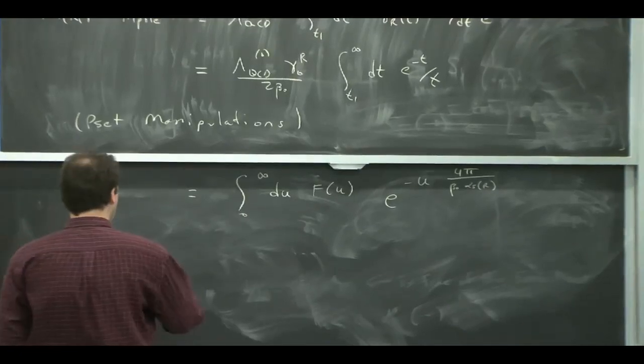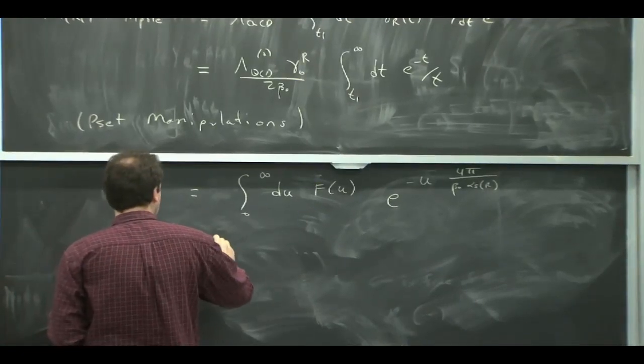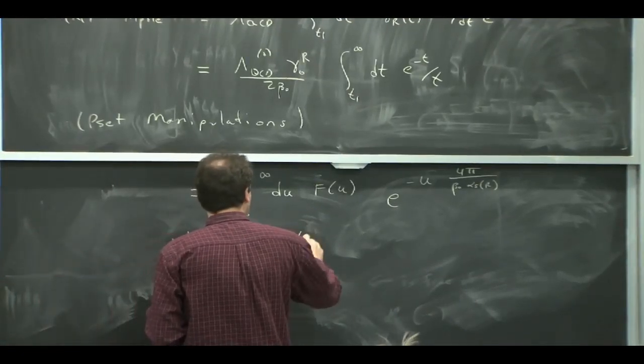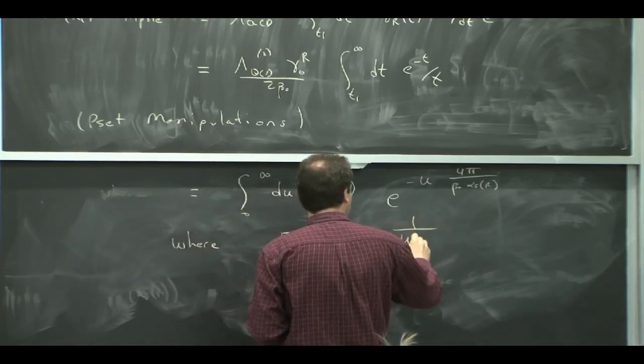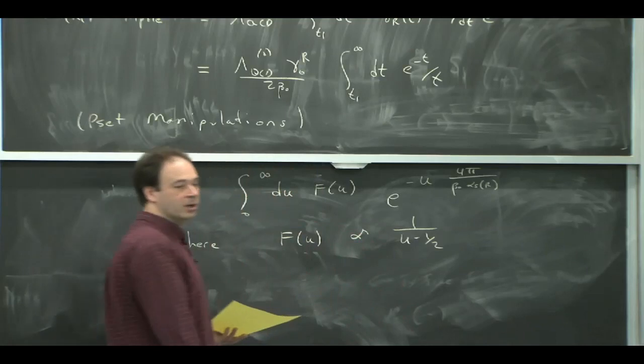So let's say I get this integral. And if you do that, what you find is that f of u is proportional to 1 over u minus 1 half.